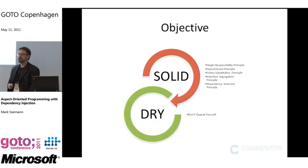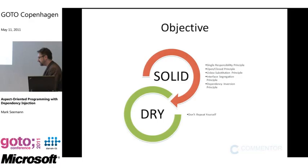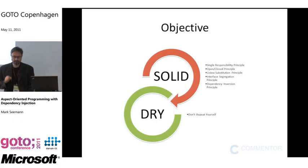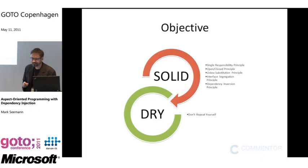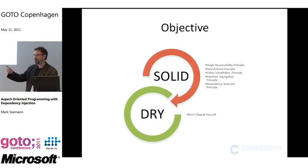SOLID is a set of five principles for object-oriented software, formulated originally by Robert C. Martin, also known as Uncle Bob. They define how to write good object-oriented software. They're not the only principles, but it's a pretty good set to measure your code against.